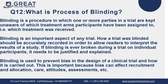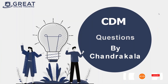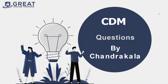The blinding process is categorized as single, double, triple, quadruple, and open. If you have any questions, you can ask in the comment section. Thank you for watching this video, see you in the next one.